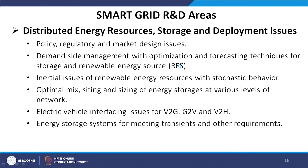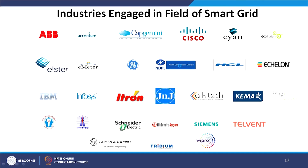In the area of energy resources, storage and deployment, research topics include: policy, regulatory and market design issues; demand side management with optimization and forecasting techniques for storage and renewable energy sources; inertial issues of renewable energy sources with stochastic behavior; optimal mix, siting and sizing of energy storage at various levels of the network; electric vehicle grid interfacing issues for V2G, G2V and V2H; and energy storage systems for meeting transient and other requirements. There are also many industries currently working on smart grid.